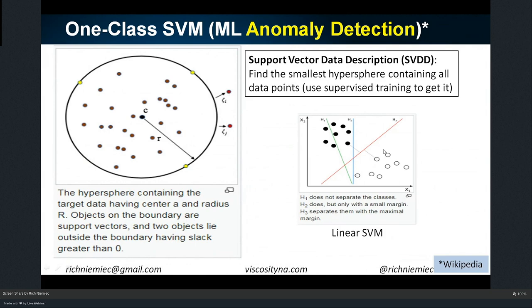A linear support vector machine separates two groups of customers — good or bad — based on what you define, like how much they spend or how often they buy. Not the green line, not the blue line — I want the red line, which is as far as humanly possible between the groups. Mathematicians have worked on these algorithms for years to make them very good. Few people understand the math behind machine learning, though it's helpful to understand it for certain algorithms so you can set the settings correctly.